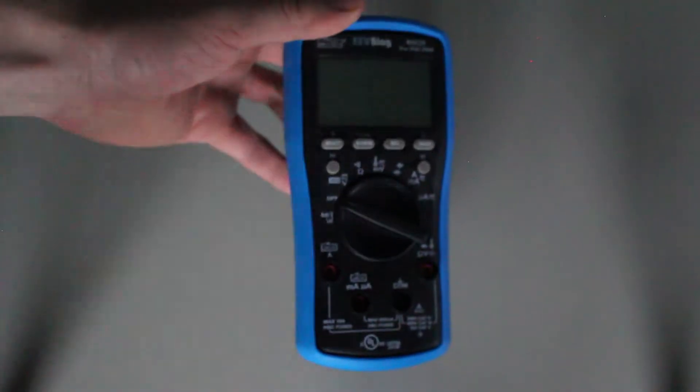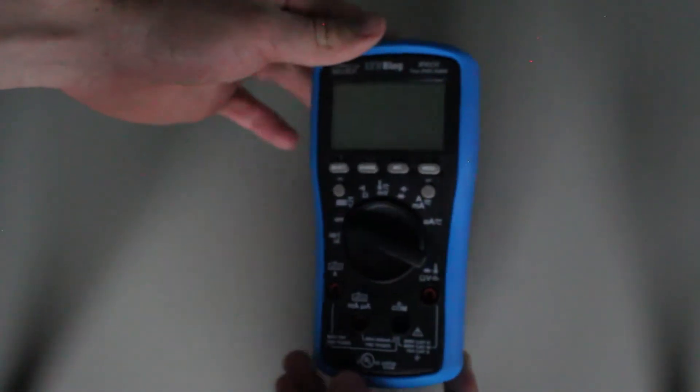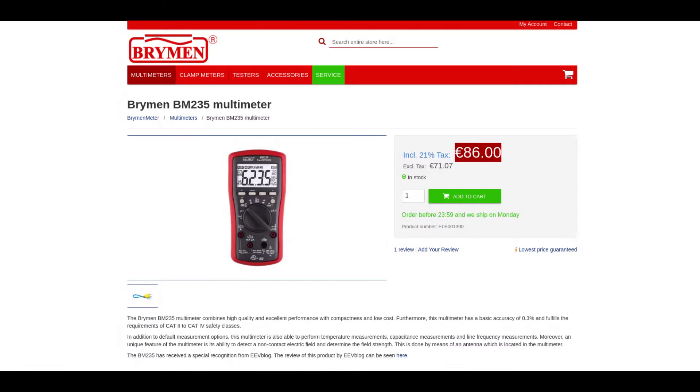The other blue one is this Ryman BM-235 multimeter, which costs about $90, and it is also branded by the EEV blog.